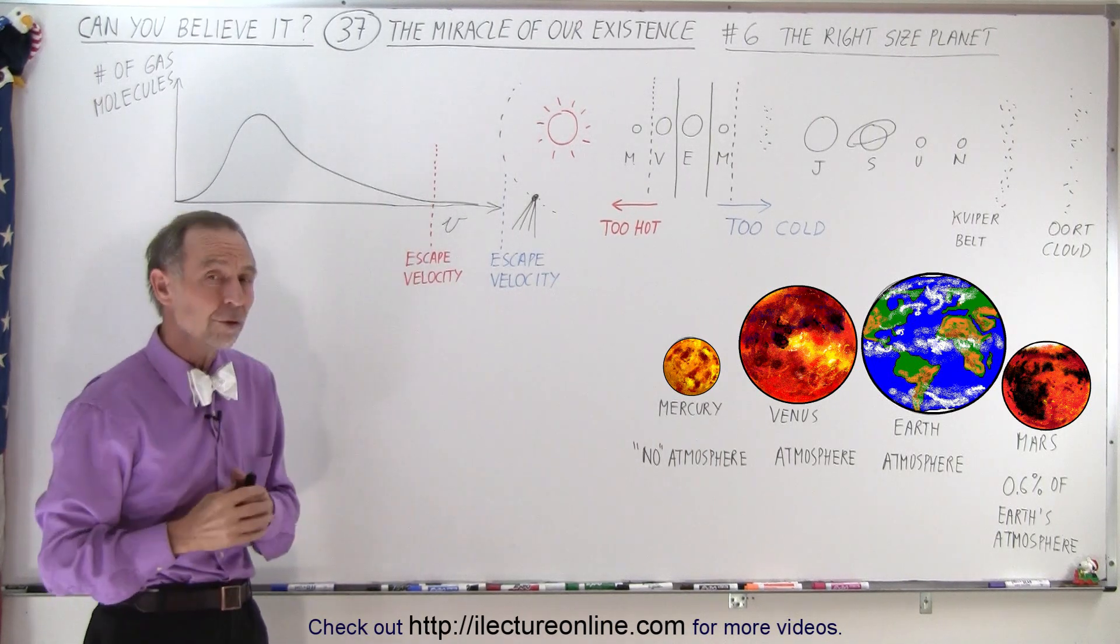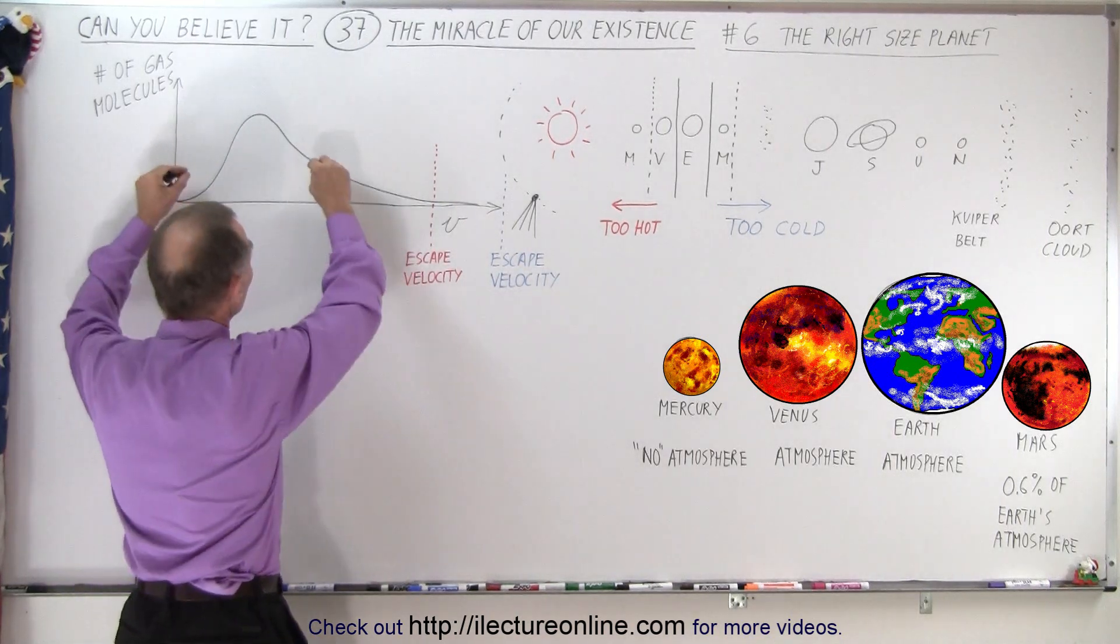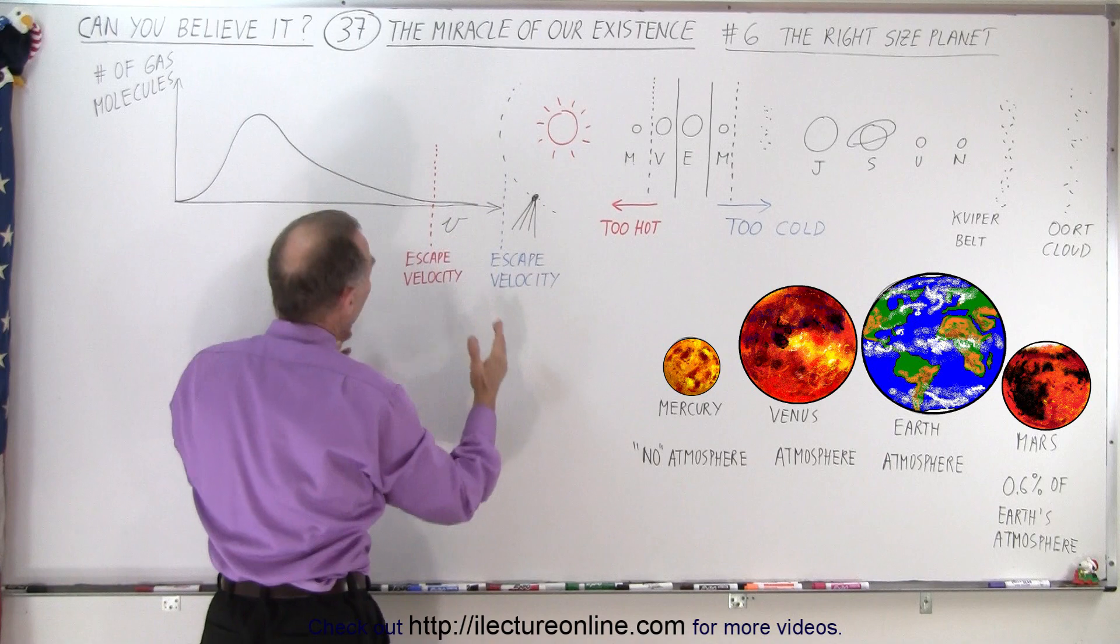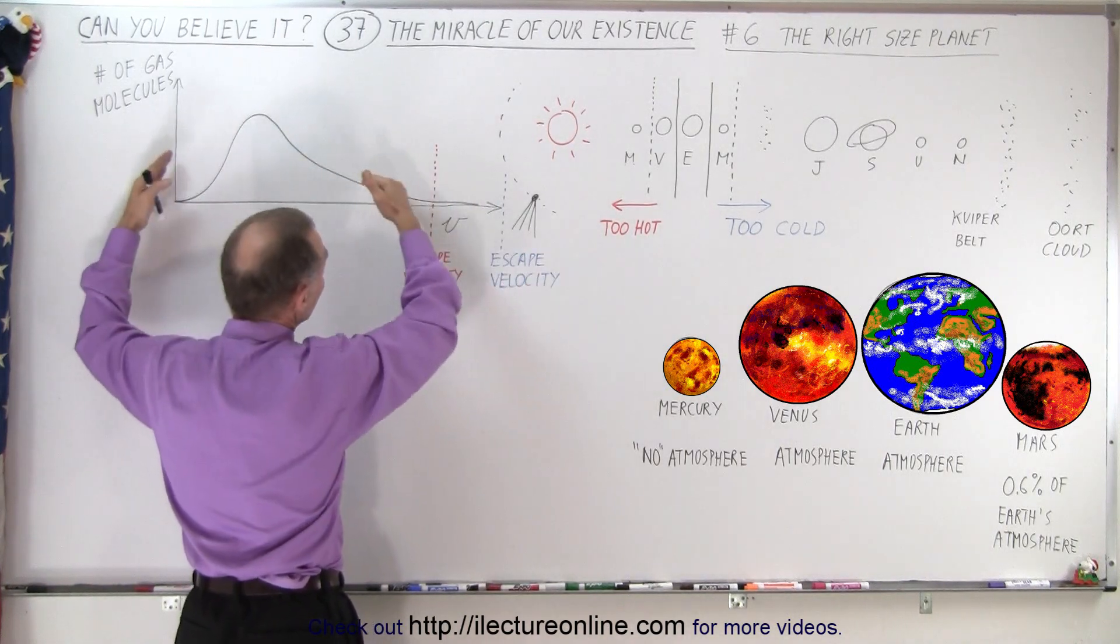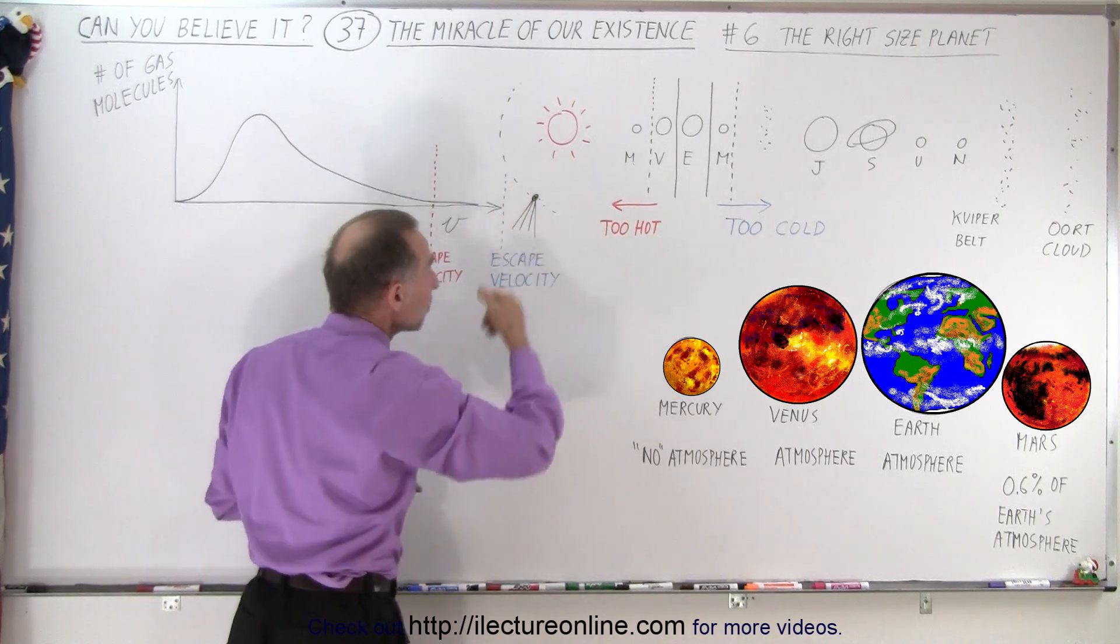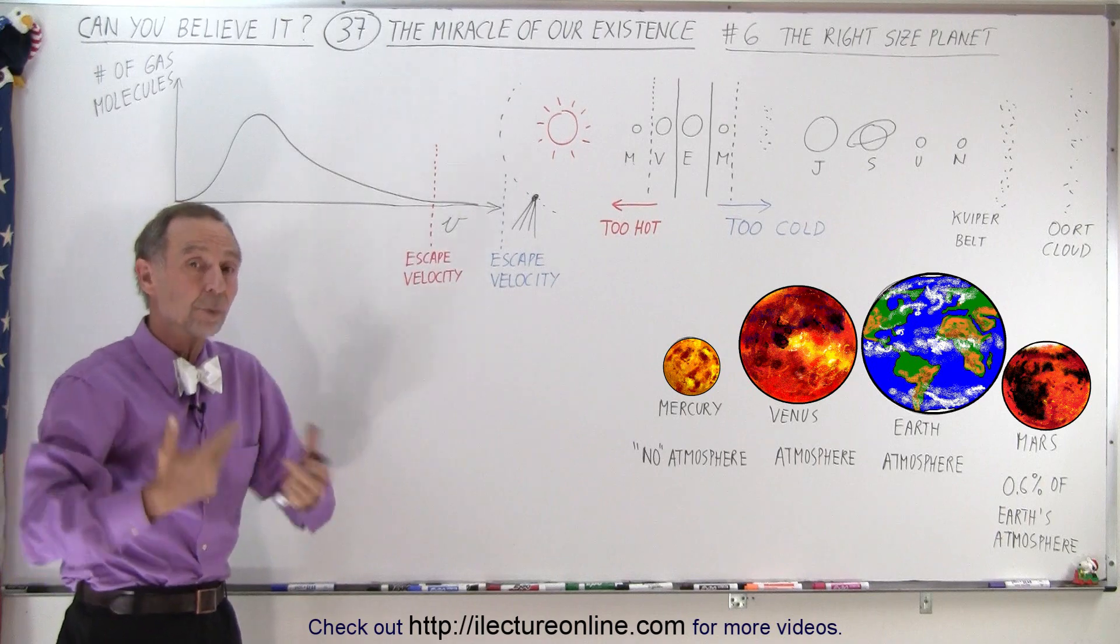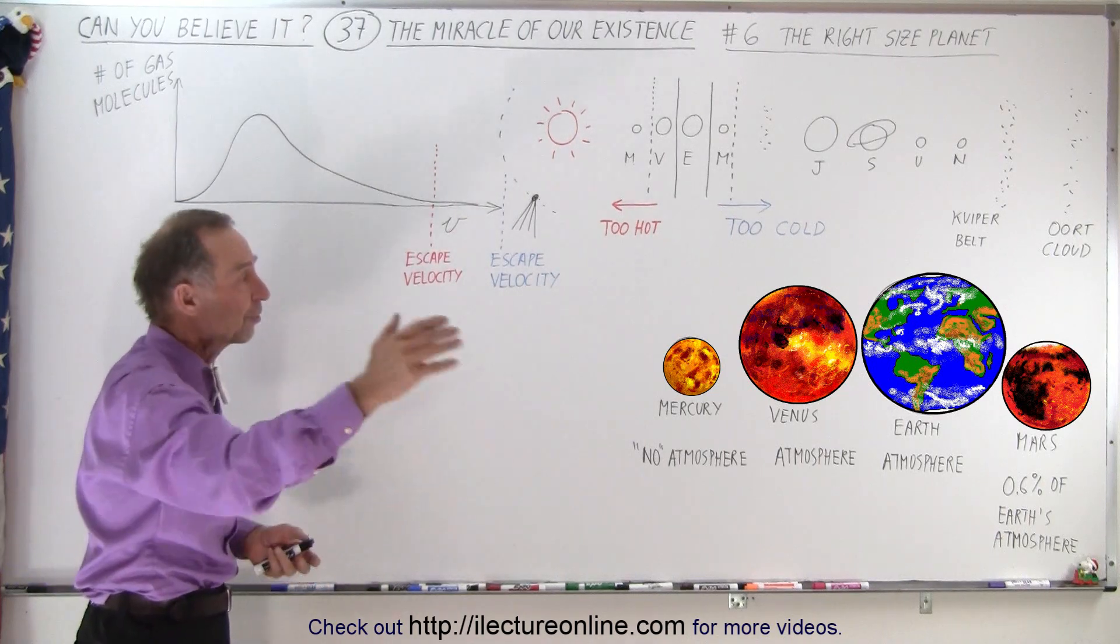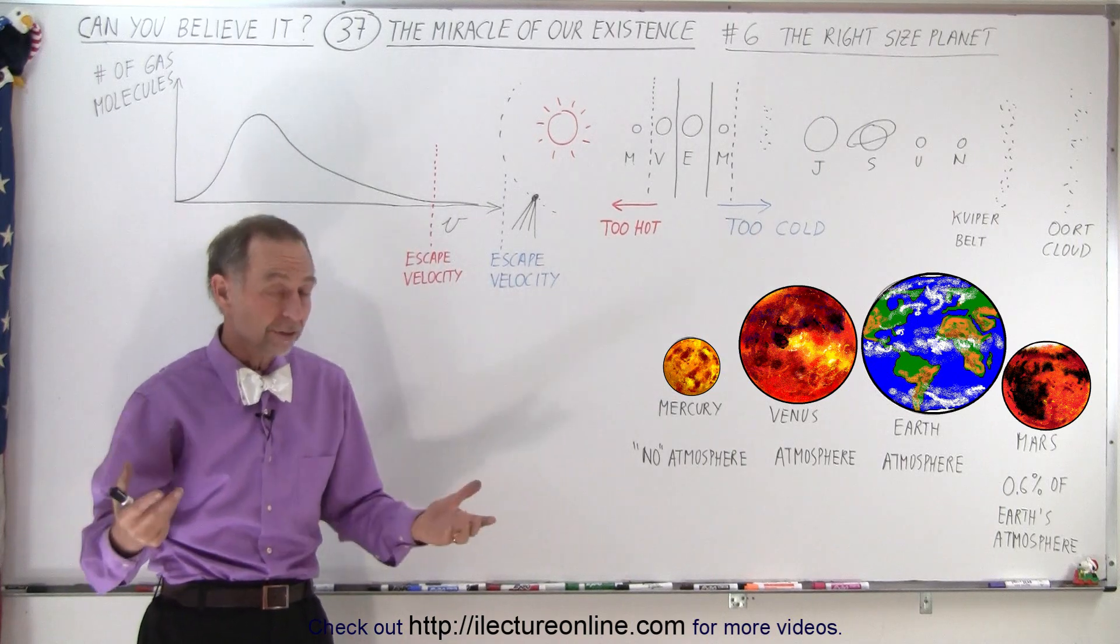The temperature also makes a difference, because the hotter it is, the faster it moves. So this whole curve will move to the right. So for a large planet that is very hot, you can see that the curve will move to the right and may move past the escape velocity of the planet. And so when it's hot, it also will result in the atmosphere leaking off.